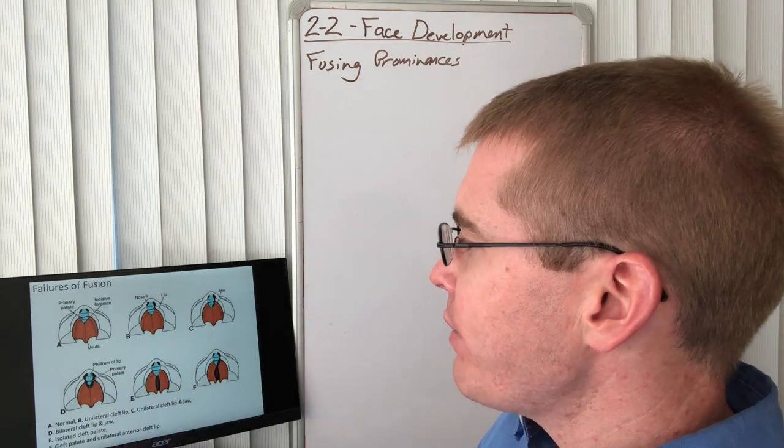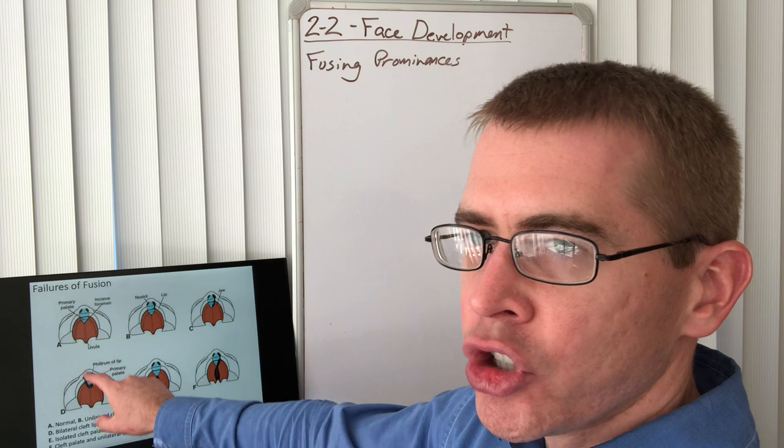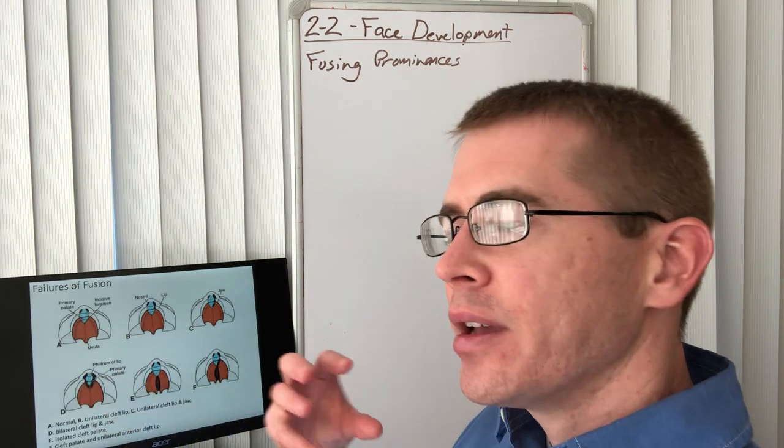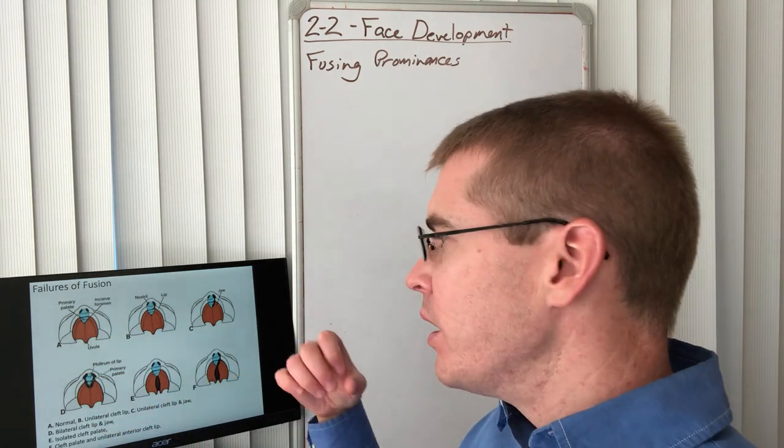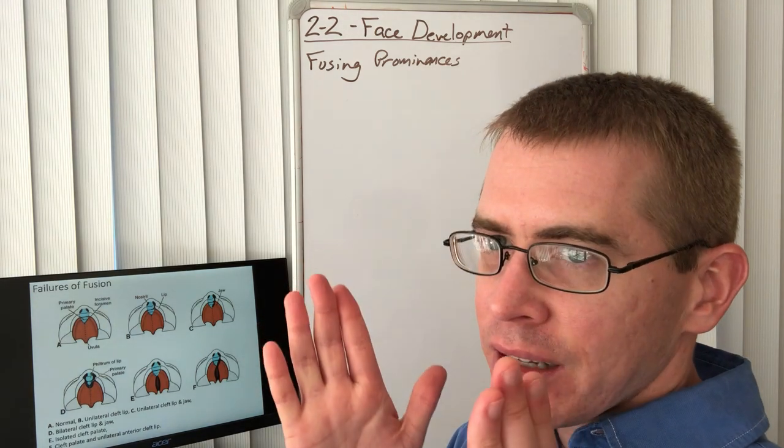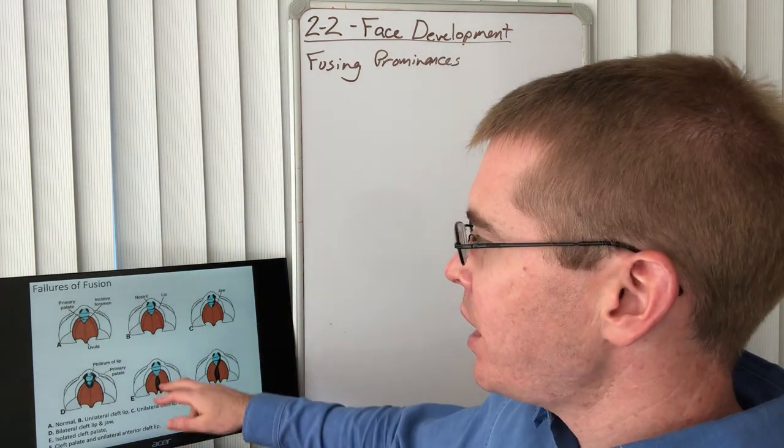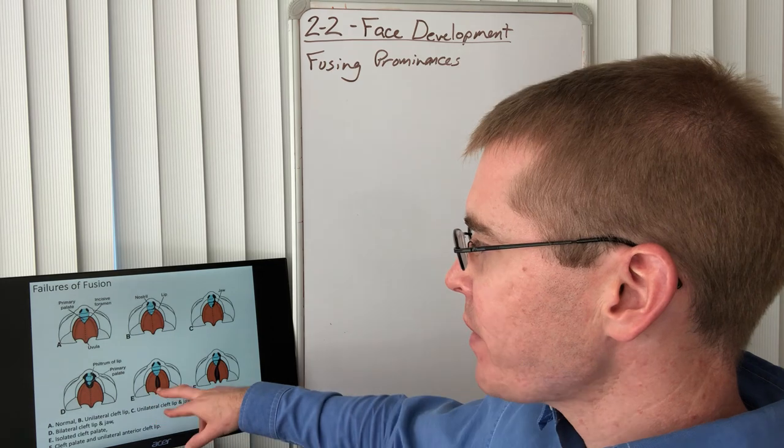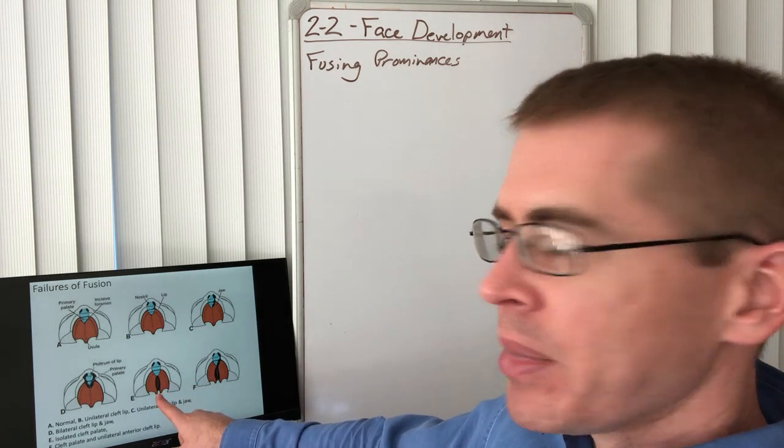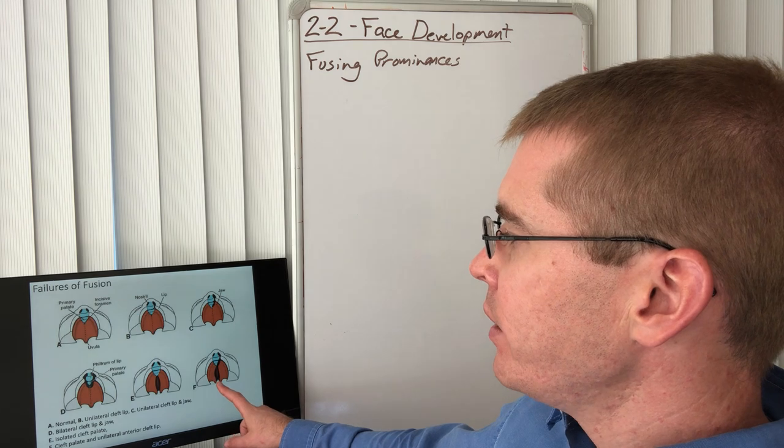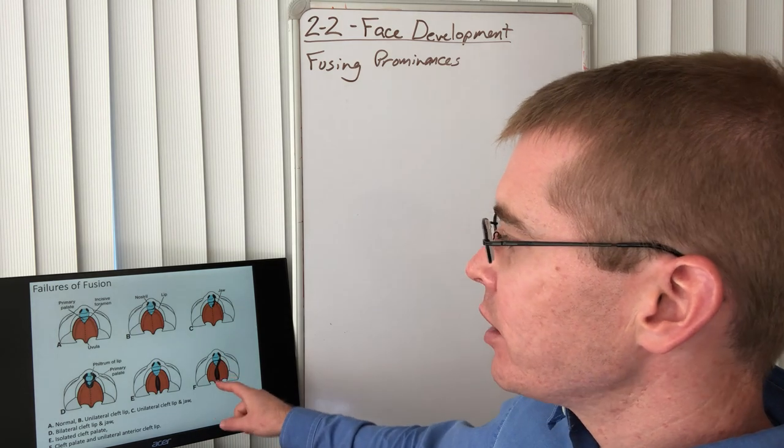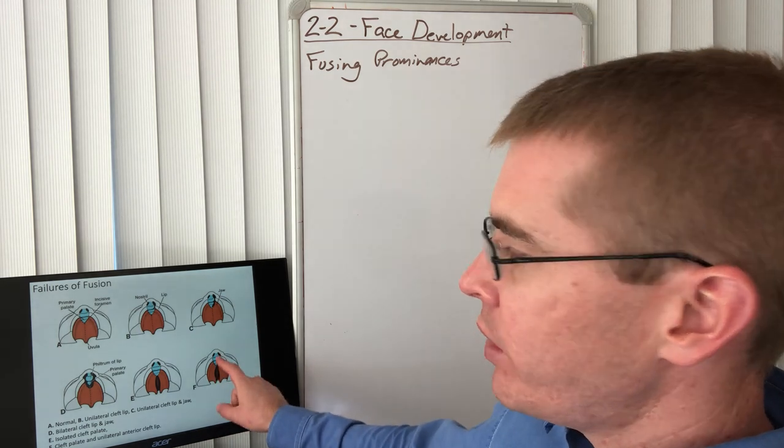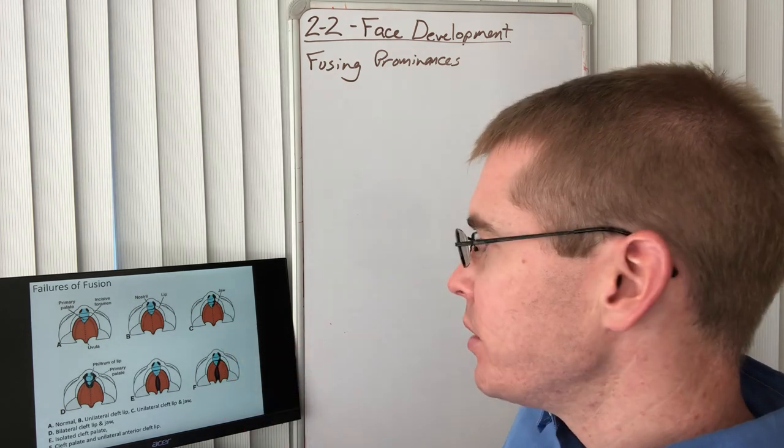Going down here, we have a bilateral cleft lip and jaw. The philtrum is basically hanging there on its own and the palates did not fuse with the philtrum on either side or the medial nasal prominences. We can also have an isolated cleft palate or we can have a complete cleft palate, with the anterior cleft lip as well.